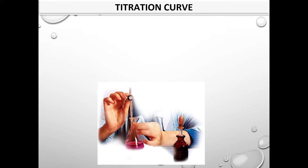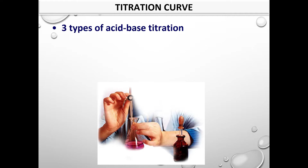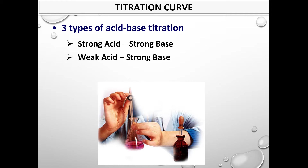As you have studied what titration is and how it is carried out, you would also need to know the types of acid-base titrations. You will be learning three types: titration between a strong acid and a strong base, the titration between a weak acid and a strong base, and the titration between a strong acid and a weak base.